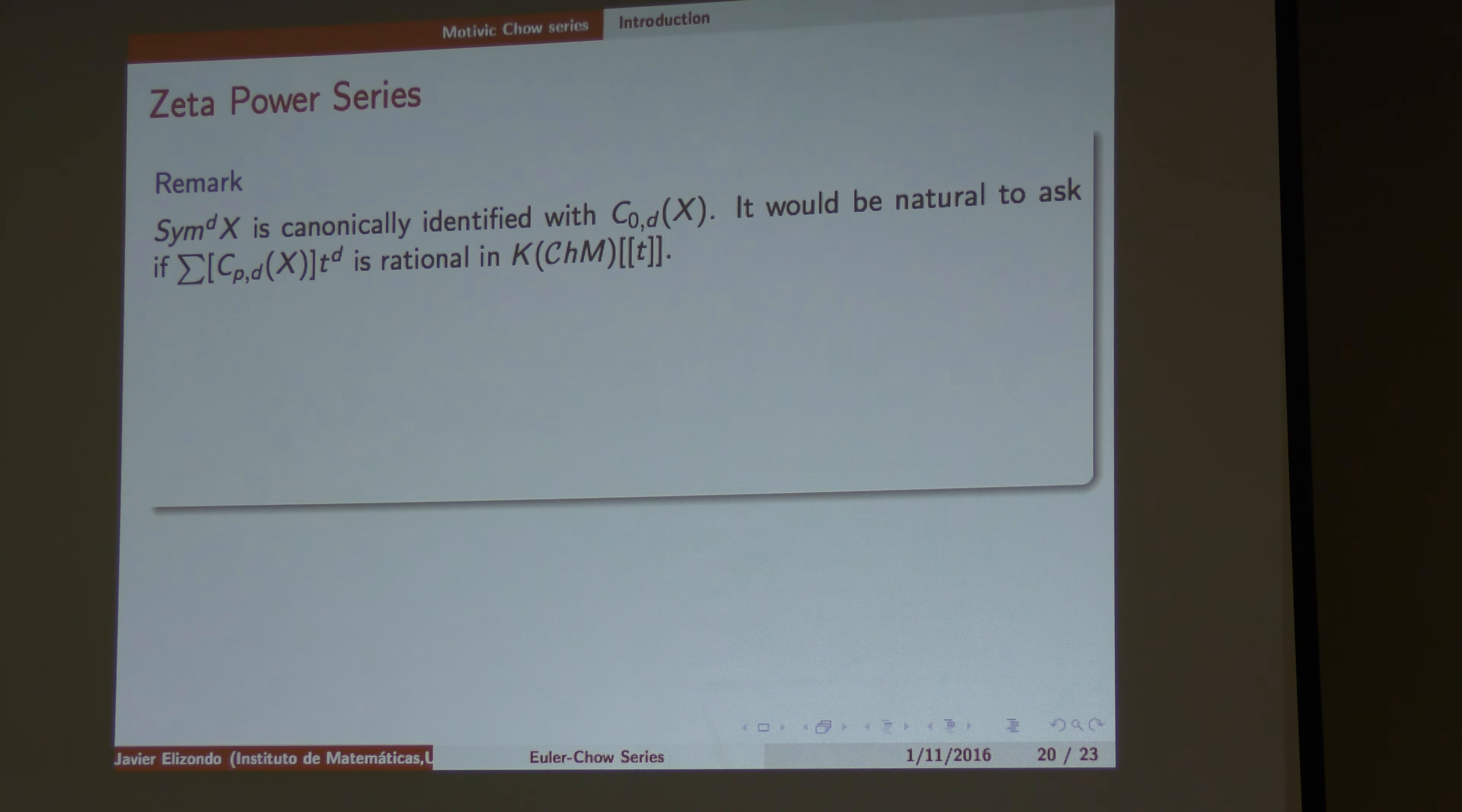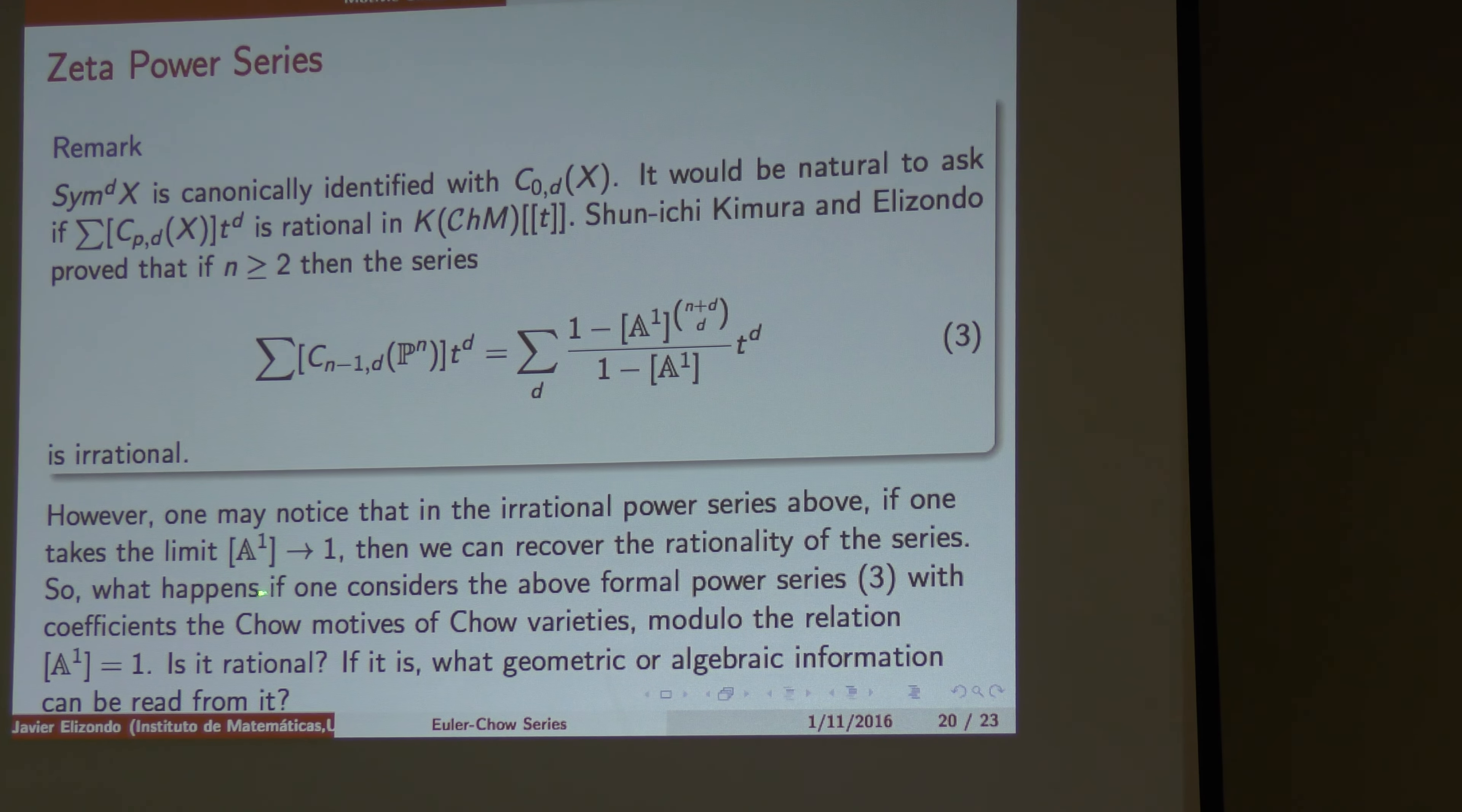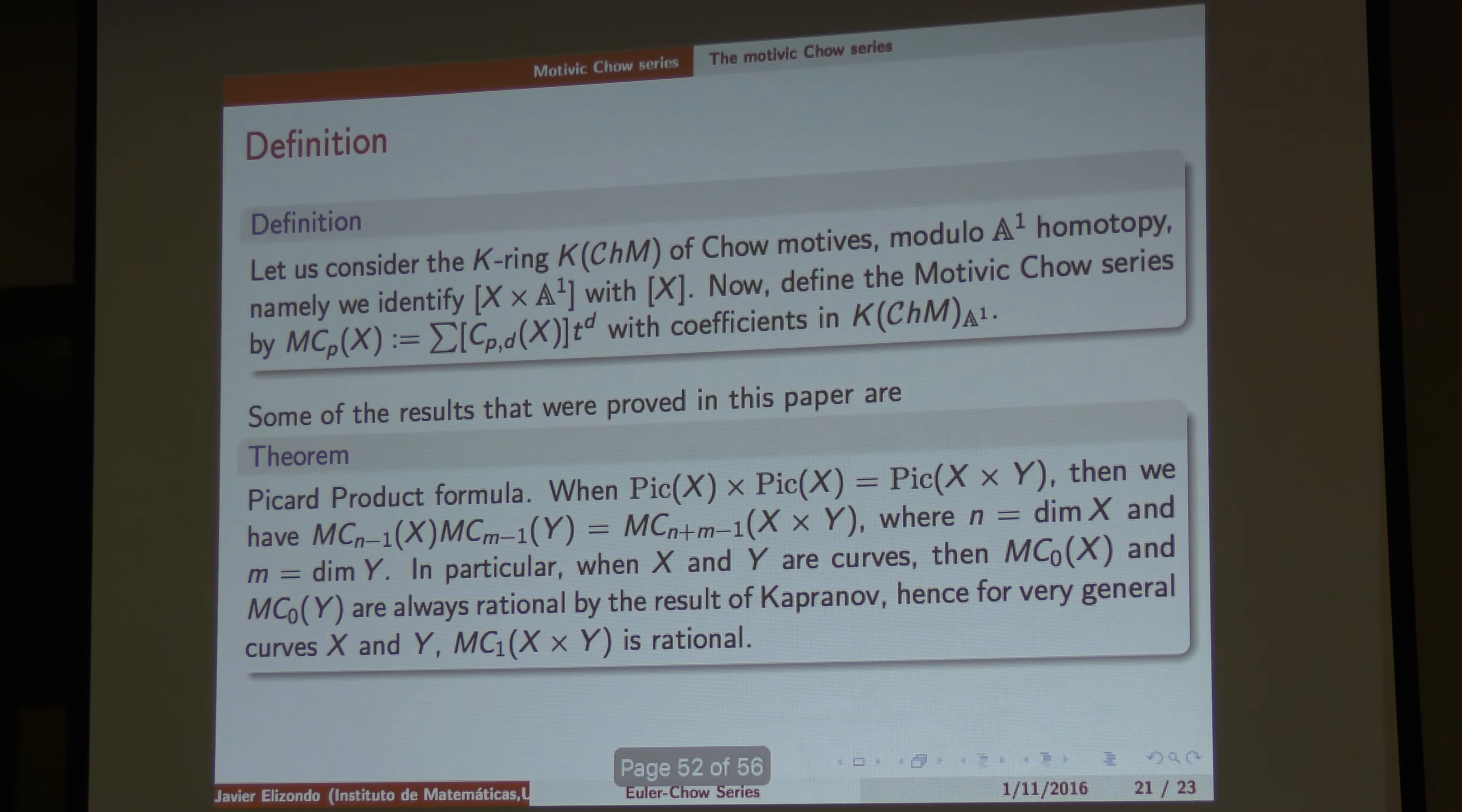So we have a series for any dimension. The first generation was just taken as direct generalization. And we proved this is not rational. But you see the denominator. So we take Chow motifs, modulo A1 and homotopy. Just taking this one. And we proved the classes.